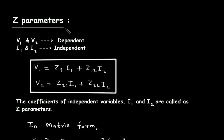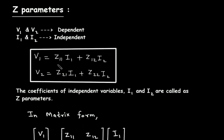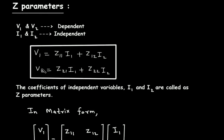Z parameters, also called impedance parameters. In impedance parameters, V1 and V2 are dependent and I1 and I2 are independent. Since V1 and V2 are dependent, V1 is equal to Z11 I1 plus Z12 I2, and V2 is equal to Z21 I1 plus Z22 I2. The coefficients of independent variables I1 and I2 are called Z parameters.